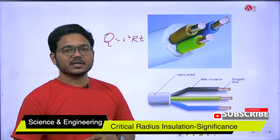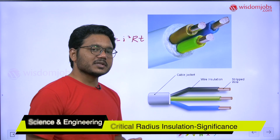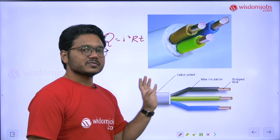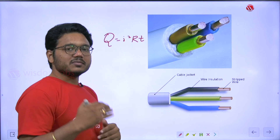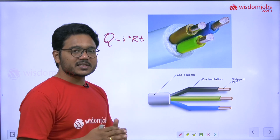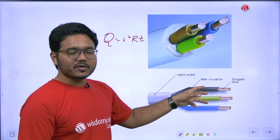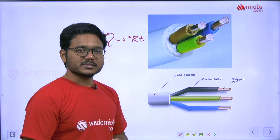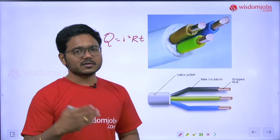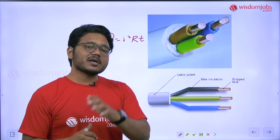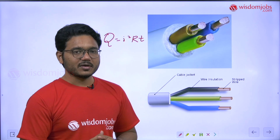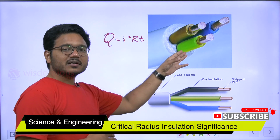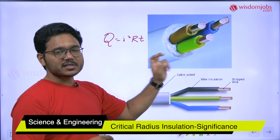There must be some critical thickness that satisfies both conditions. That radius is called the critical radius. To be precise, the critical radius is the point where heat transfer is maximum. This critical radius decides whether the thickness of insulation should be less than or greater than the critical thickness — which dimension is required for these electrical wires.